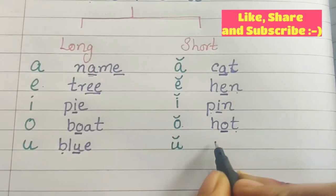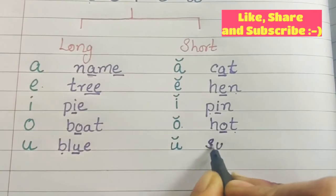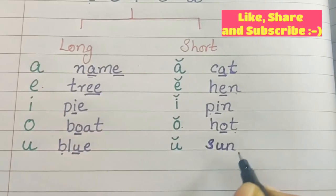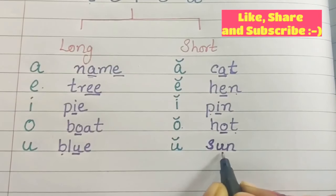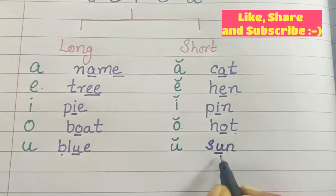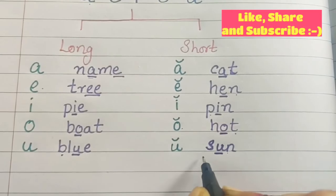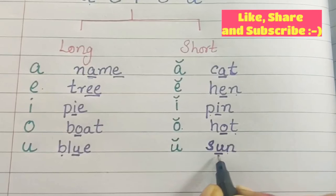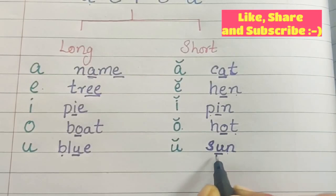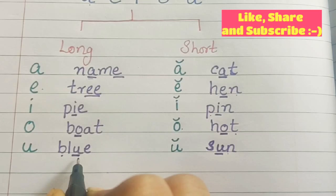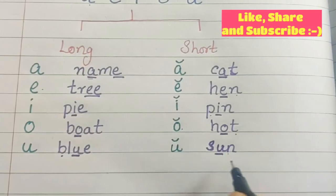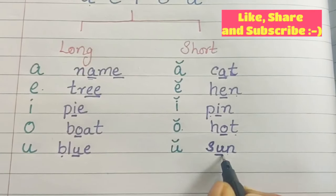Then for short vowel U, take the example of sun. S-U-N, sun. U is getting the sound of U. Sun. And here we are getting the long sound of U — blue. And here we are getting the short sound of U, that is U — sun.